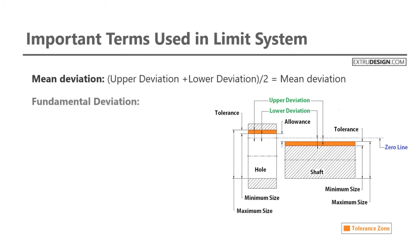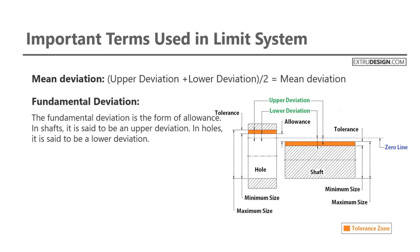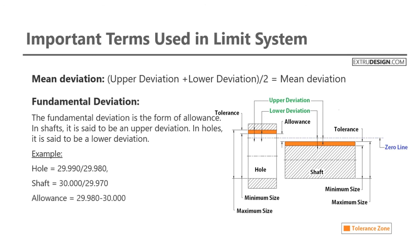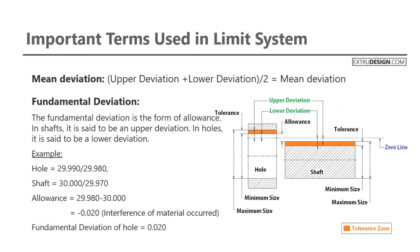Mean deviation is the average of upper deviation and lower deviation. The last term is fundamental deviation. Fundamental deviation is a form of allowance — in shafts it is the upper deviation, and in holes it is the lower deviation. For example, with a hole of 29.990/29.980 and a shaft of 30.000/29.970, the allowance is 29.980 minus 30.000 equal to minus 0.020, where interference of material occurs. The fundamental deviation of both the hole and shaft will be 0.020.